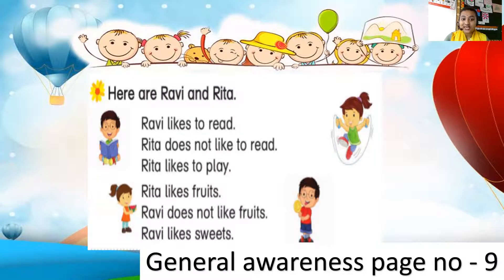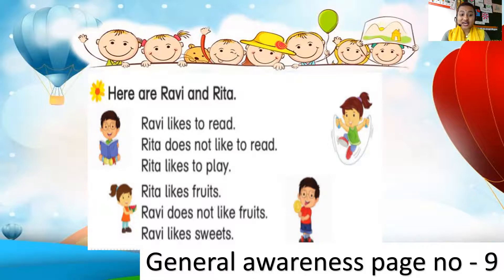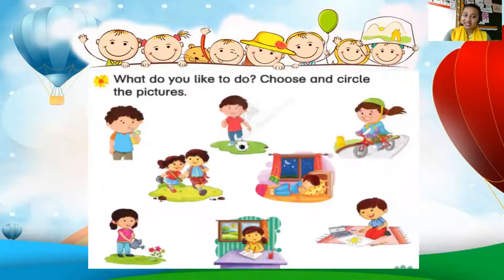So let's see this once again. We have two friends — Ravi and Rita. Ravi likes to read books, but Rita does not like to read books. Rita likes to play. Rita likes fruits, but Ravi does not like fruits. And Ravi likes sweets.